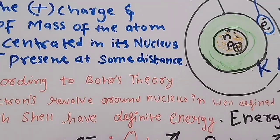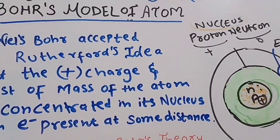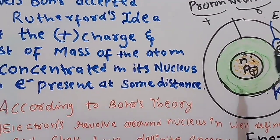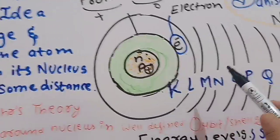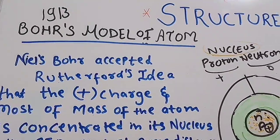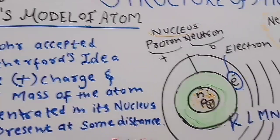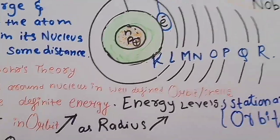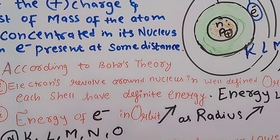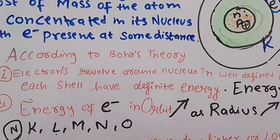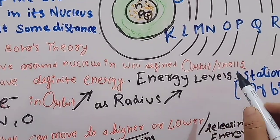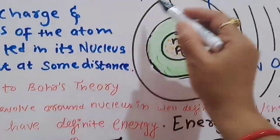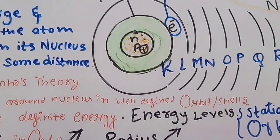Niels Bohr accepted Rutherford's idea that the positive charge is concentrated at the center and electrons are at some distance. In 1930, Niels Bohr presented the Bohr atomic model and was awarded the Nobel Prize for this work. He was a Danish physicist. Now let us see some postulates of Bohr's theory: electrons revolve around the nucleus in well-defined orbits or shells, and each shell has a definite energy.